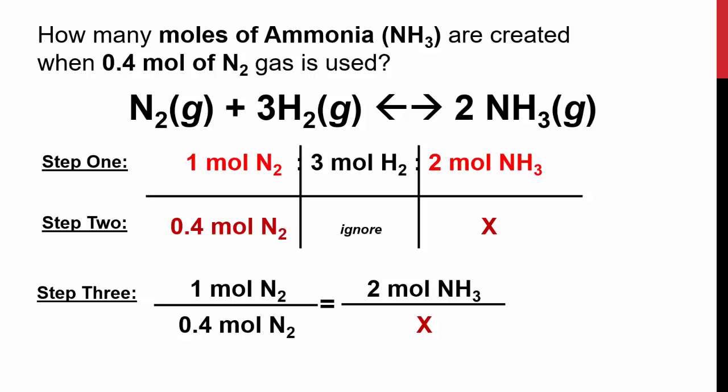The last step is to simply cross-multiply and solve for x. So, 1 mole of nitrogen over 0.4 moles of nitrogen is equal to 2 moles of ammonia over x. When you cross-multiply and solve, you should get 0.8 moles of ammonia being produced. Does this make sense? It should make sense because you have less than 1 mole of nitrogen being made, which means you have less than what you started with. So, you should end up with less than what you end with.